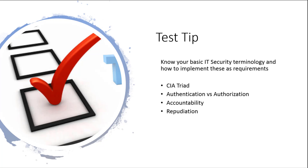For example, the CIA triad — we want to know what it is and why it's important. We want to go into the exam being able to identify authentication and authorization: what do we know and what do we have? Also accountability and non-repudiation.